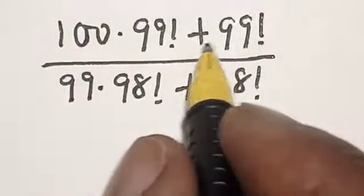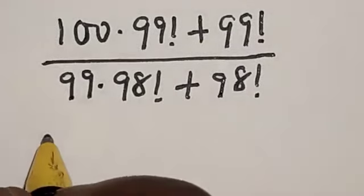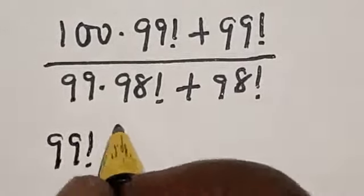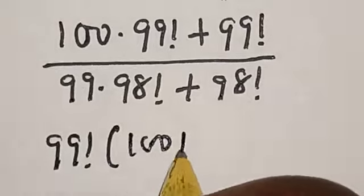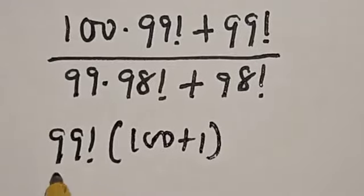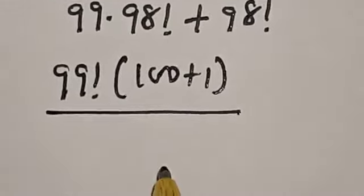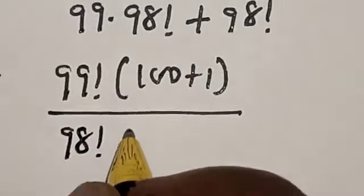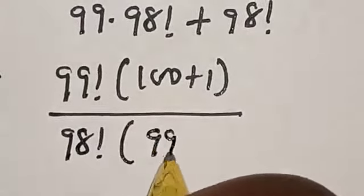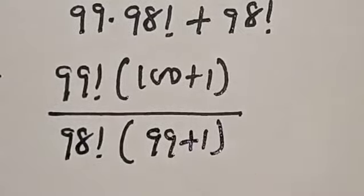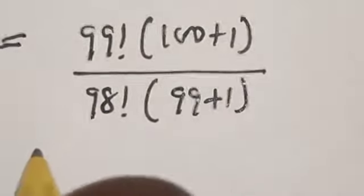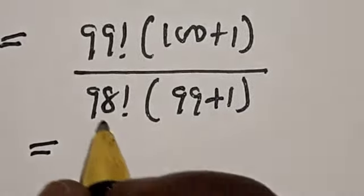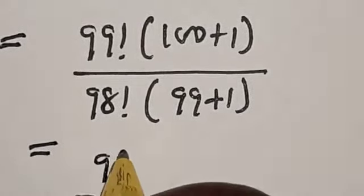Now we factor: we bring out 99 factorial, giving us 99 factorial into 100 plus 1, divided by 98 factorial into 99 plus 1.